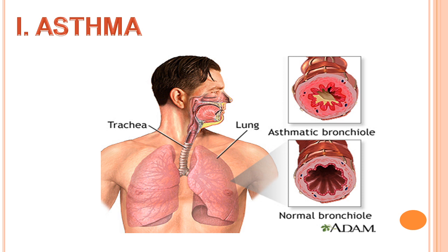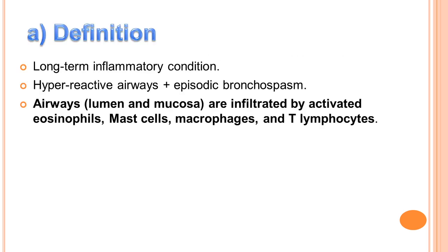The first one is asthma. I think asthma is very familiar to most of you watching this video, so I will define it briefly. Asthma is a long-term inflammatory condition. It's due to hyperreactive airways with episodic bronchospasm when stimulated by certain factors. Đầu tiên là về hen suyễn. Mình nghĩ hen suyễn rất quen thuộc với đa số các bạn, nên mình sẽ định nghĩa nó một cách ngắn gọn. Hen suyễn là một tình trạng viêm mạn tính do sự phản ứng quá mức của đường dẫn khí với từng cơn co thắt phế quản khi bị kích thích với một số yếu tố nhất định.